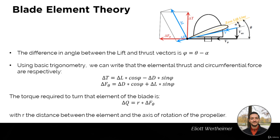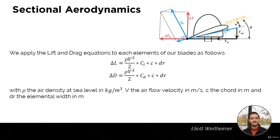The torque required to turn the blade element is delta Q, which equals the distance R from the axis of rotation multiplied by the circumferential force delta F_theta. R is the distance between the element and the axis of rotation of the propeller. We now need to calculate the actual lift and drag produced by each element.